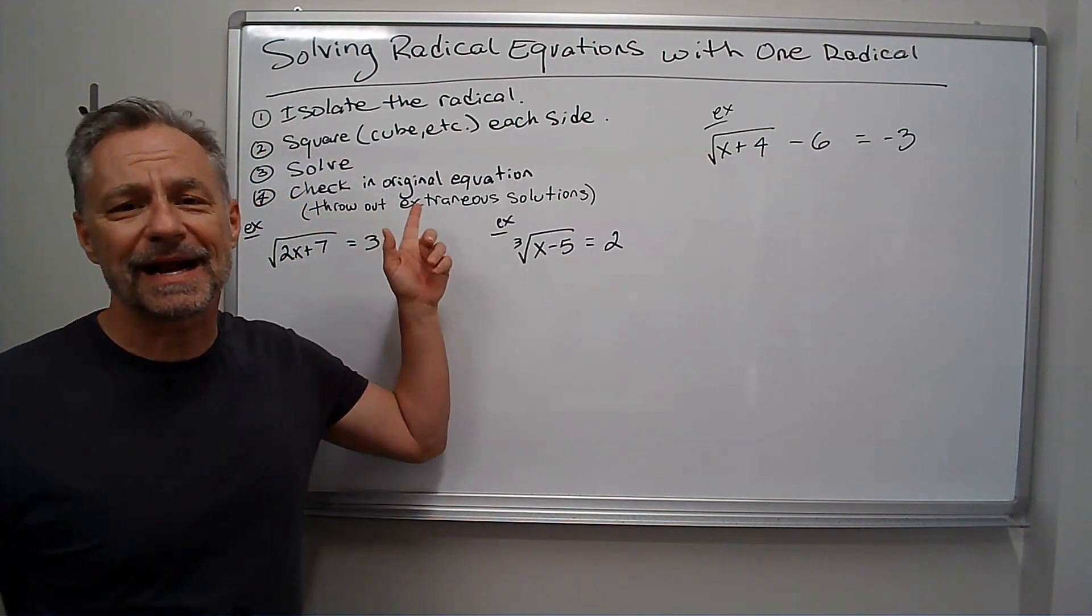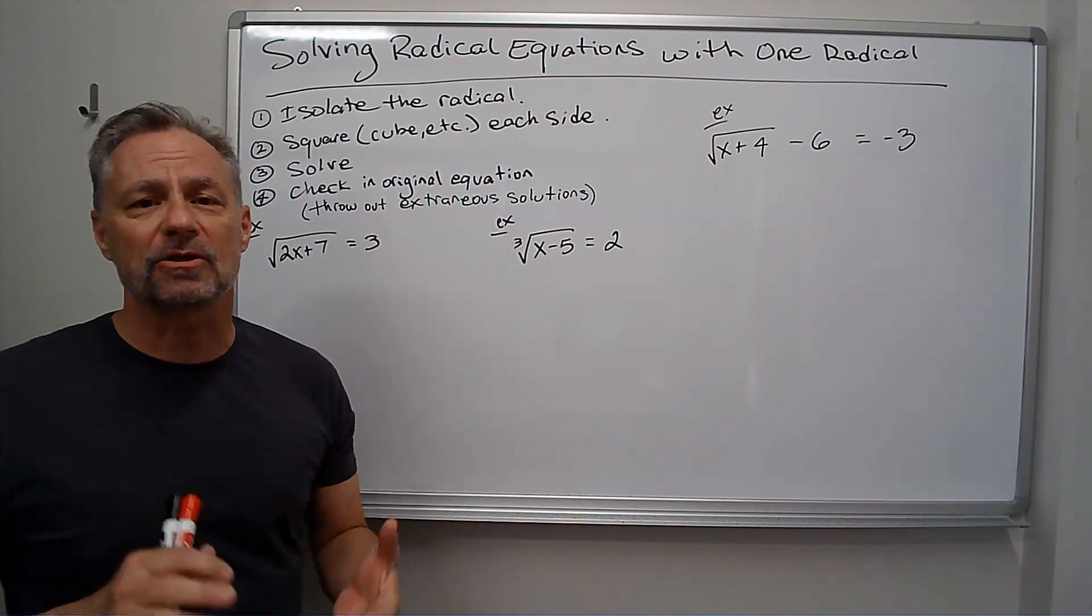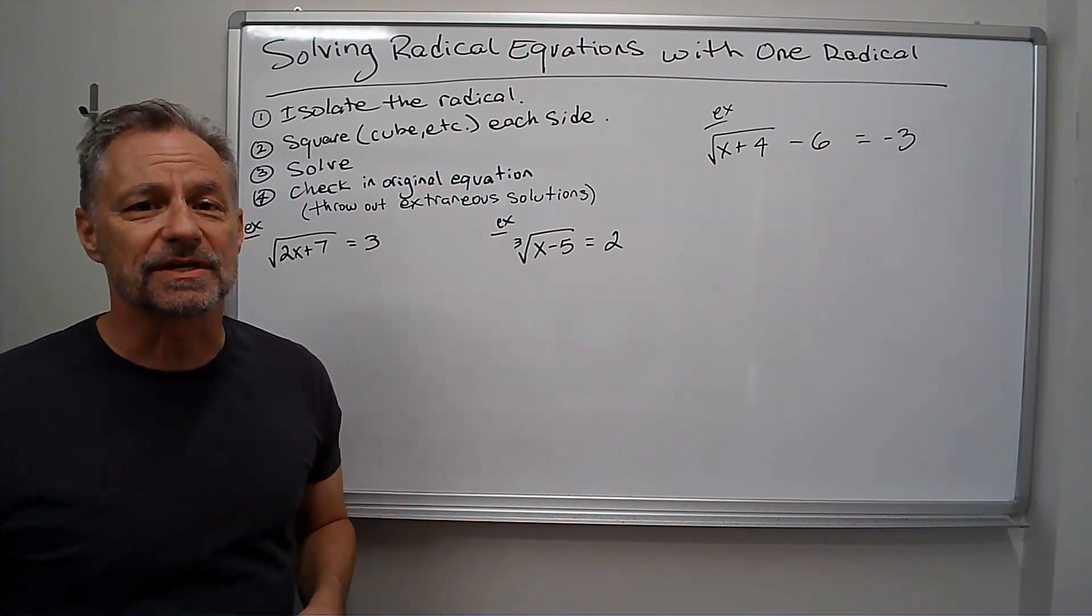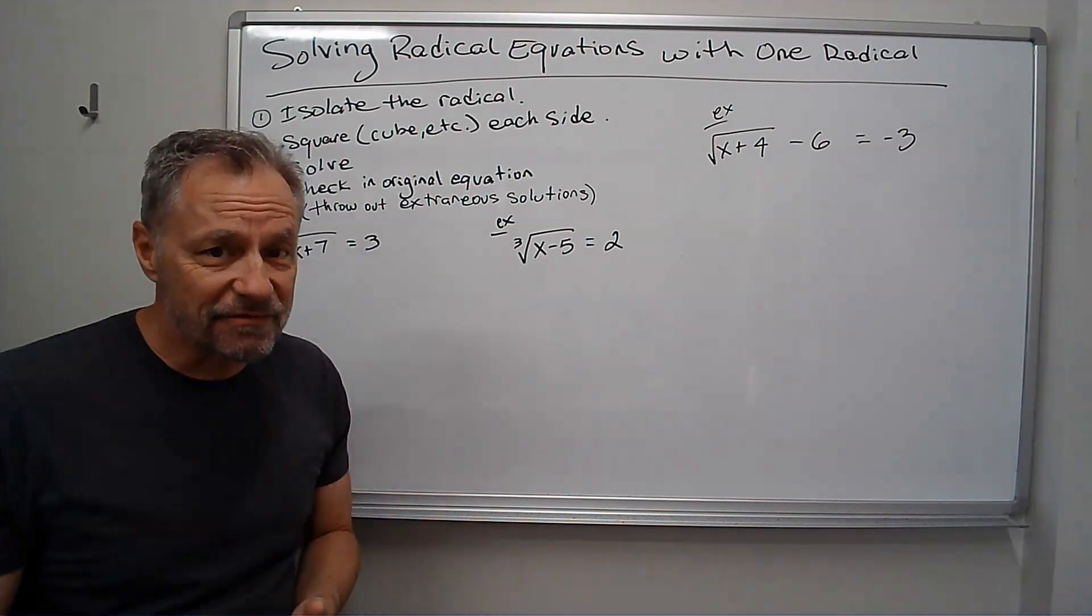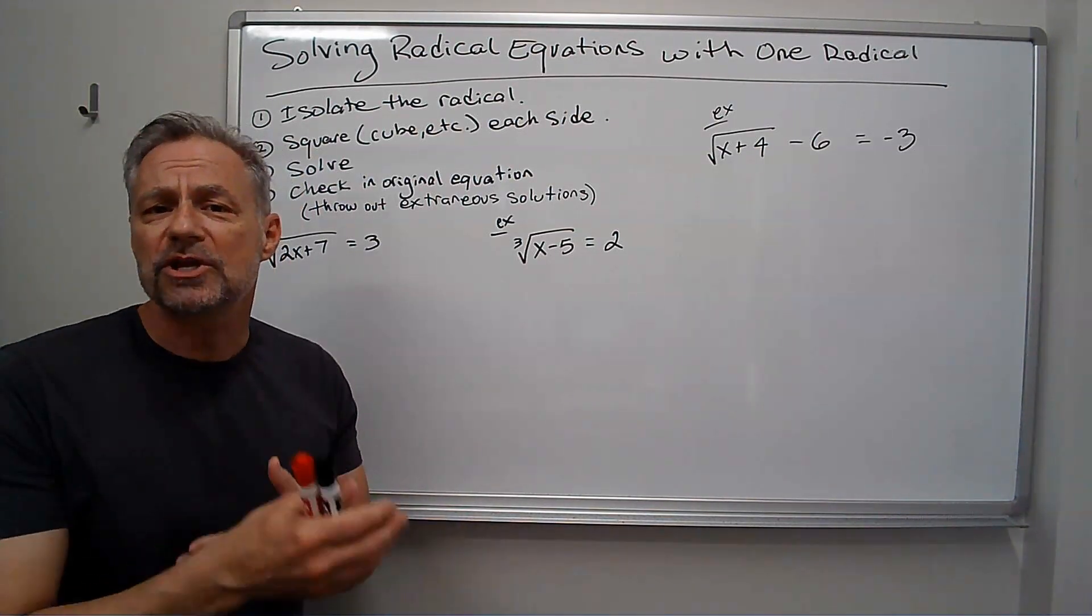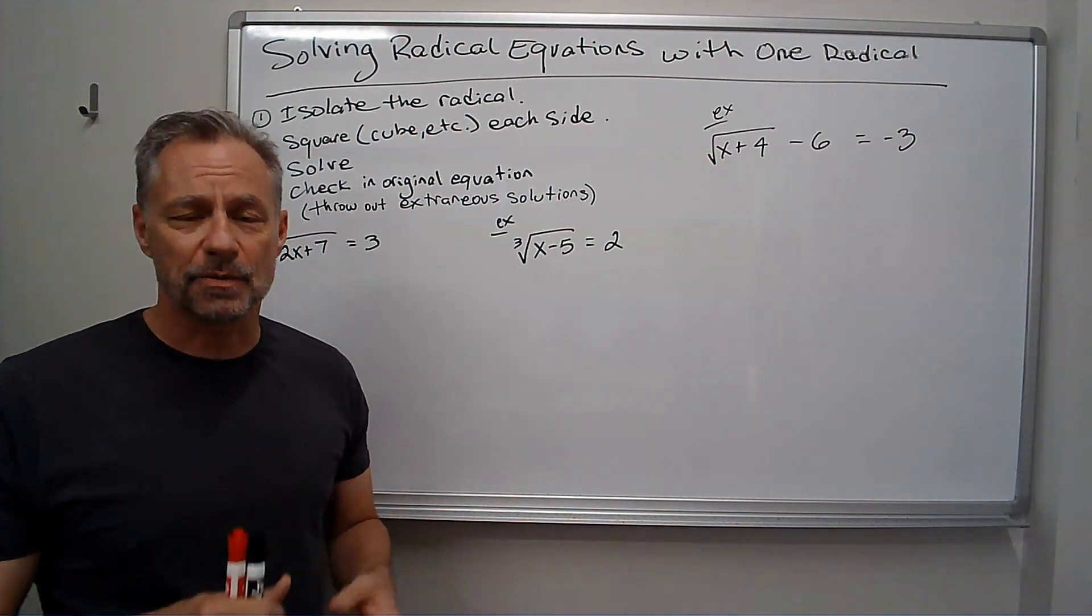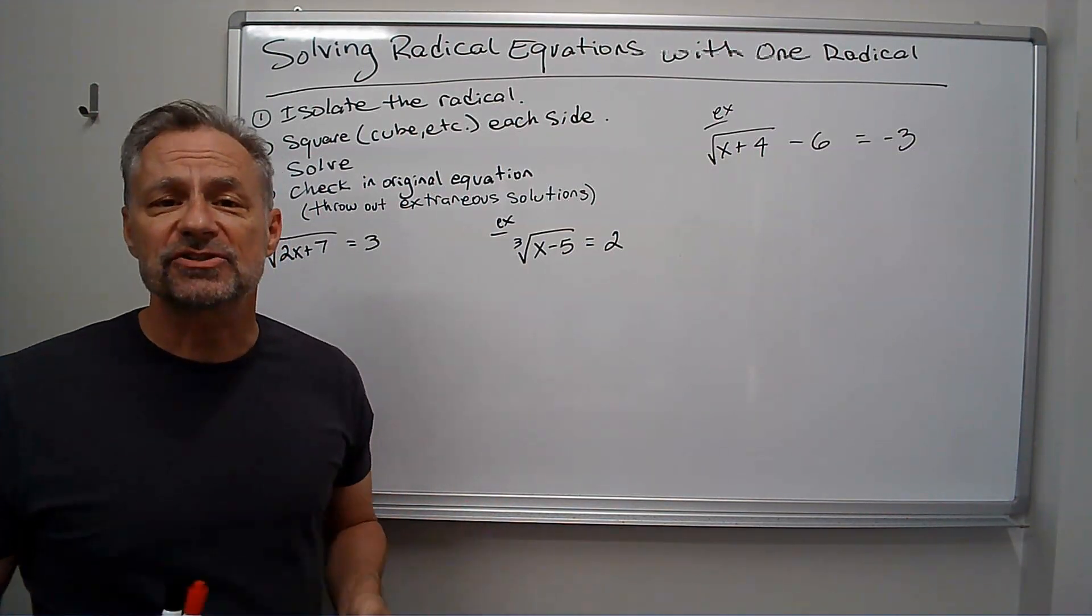So the first thing we're going to do is isolate the radical, meaning get the radical all by itself on one side of the equation. Then we're going to square the radical, square both sides of the equation to get rid of the radical. And if it's a cube root, we cube it, whatever's appropriate to get rid of the radical. Then we're just going to solve whatever's remaining.